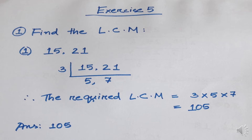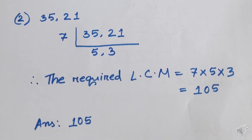The answer of number 1 is 105. For number 2, we have 35 and 21. We will use the prime factorization method. We divide by 7: 7 divides 35 to give 5, and 7 divides 21 to give 3. Therefore, the required LCM is equal to 7 × 5 × 3 = 105. The answer is 105.